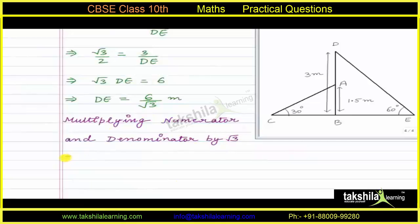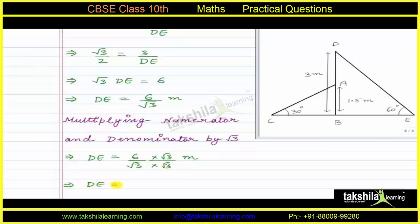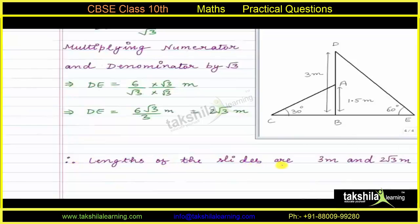Rationalizing the denominator by multiplying numerator and denominator by √3: DE = 6√3 / 3 = 2√3 meters. Therefore, the lengths of the slides are 3 meters and 2√3 meters. This is our answer.